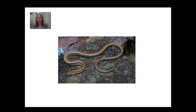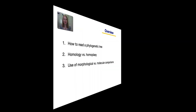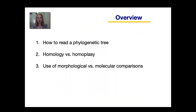So first let's look at this picture. When you see this animal, what do you think it is? It is a lizard. So how do scientists know that this organism is a lizard and not a snake? In today's lesson you will learn how to read a phylogenetic tree, the difference between a homology versus a homoplasy, and the use of morphological versus molecular comparisons for making phylogenetic trees.